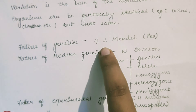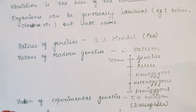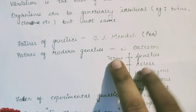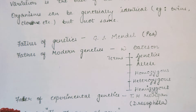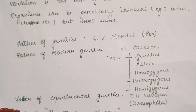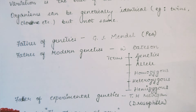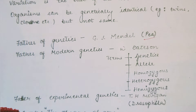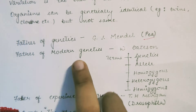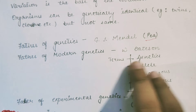The father of genetics is J.G. Mendel — that is George Johann Mendel. His work is called the foundation of genetics. In genetics, monohybrid and dihybrid crosses are processed. He worked with plants across multiple generations and established the core principles of genetics.